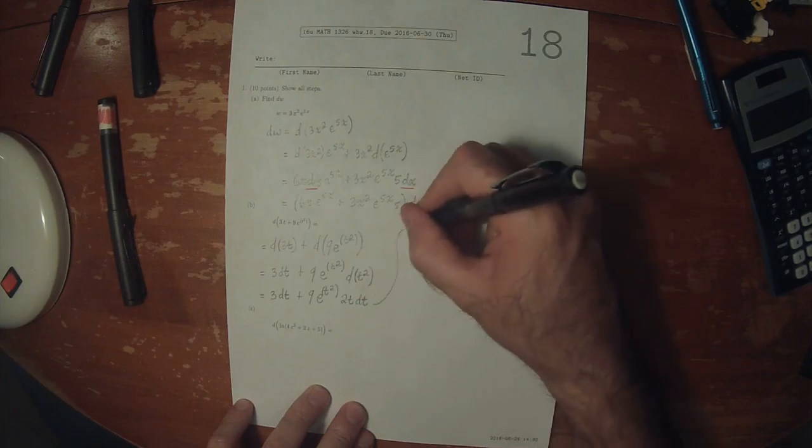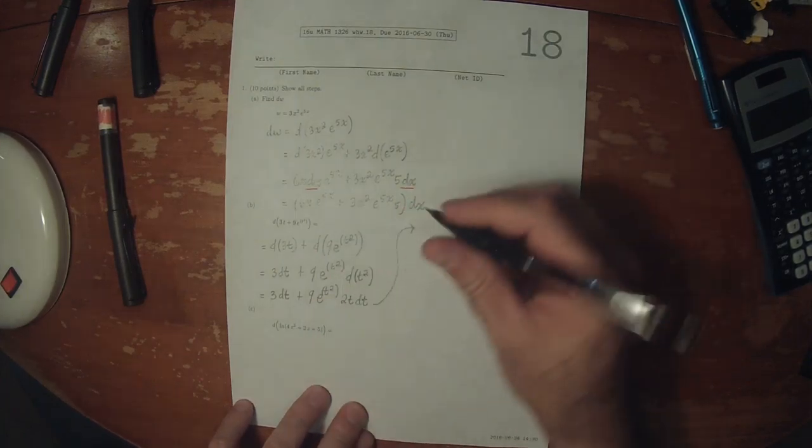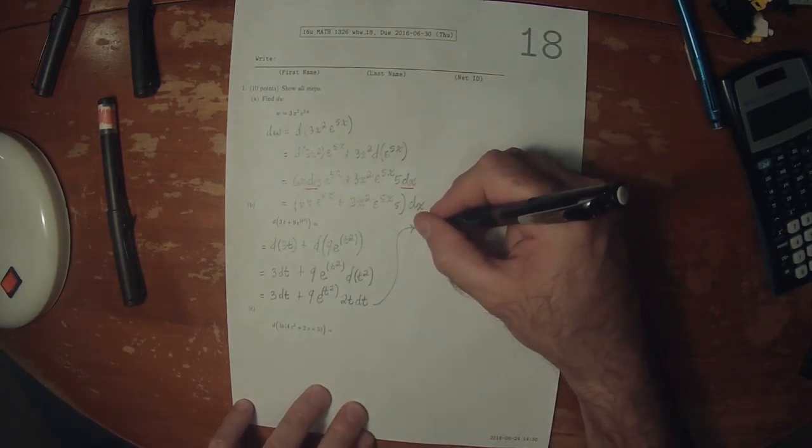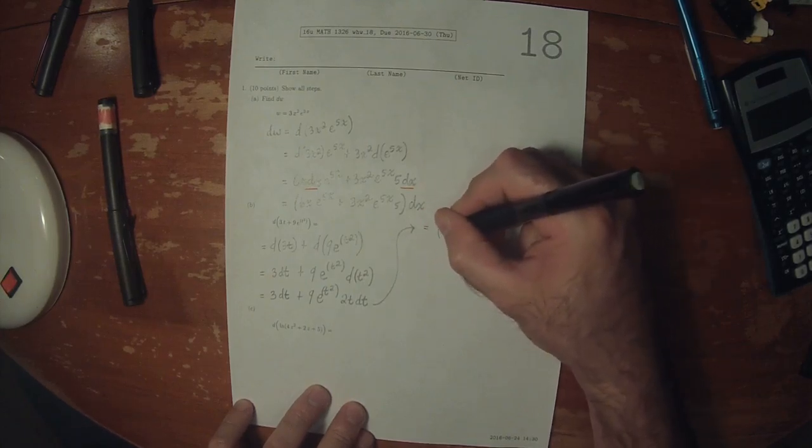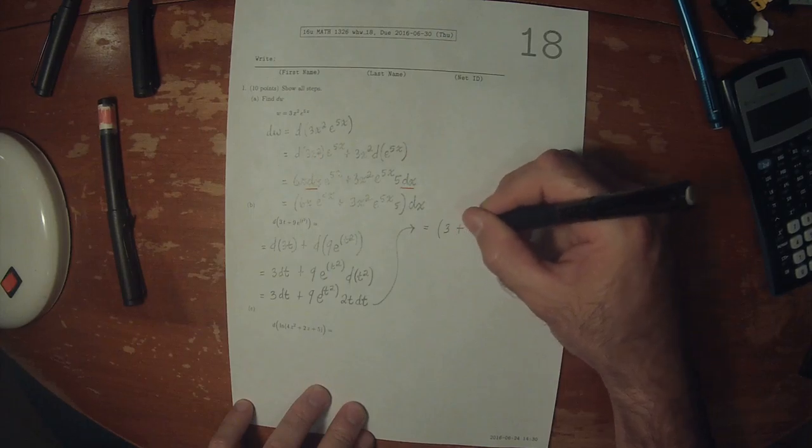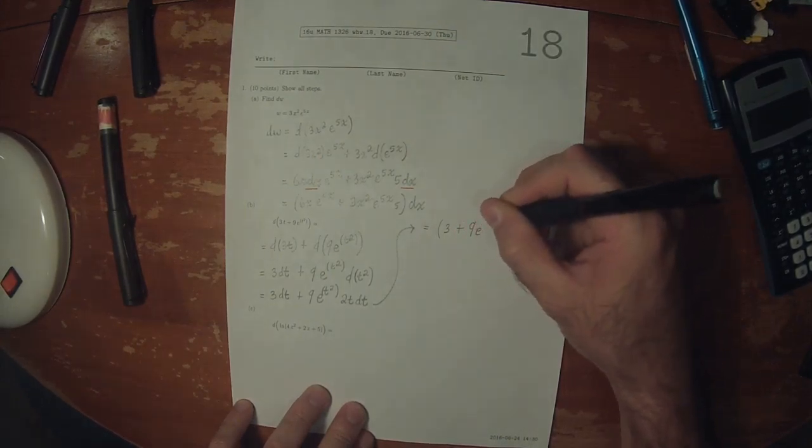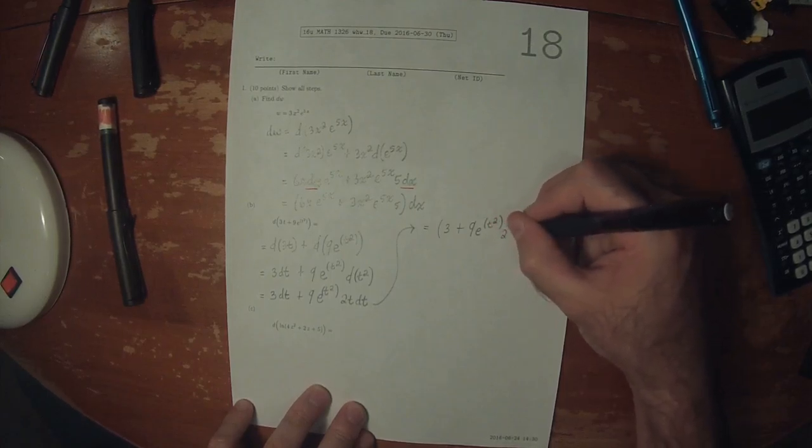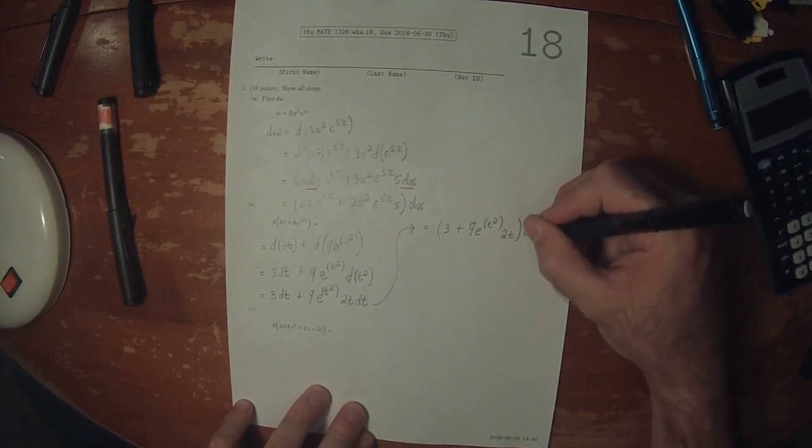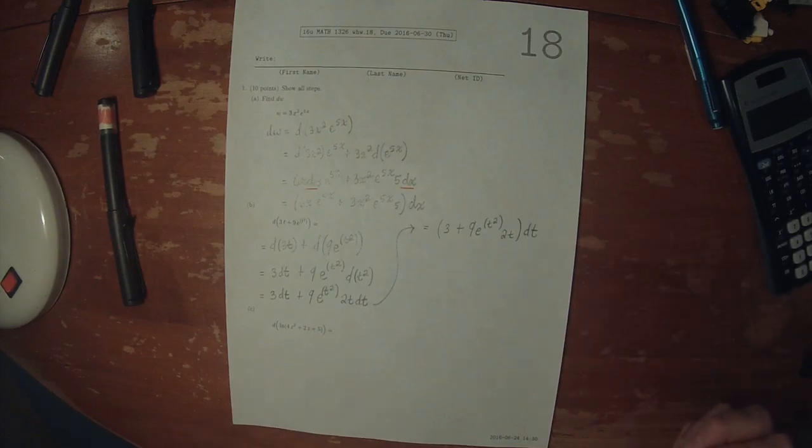Similar to the previous exercise, the dt is common, so that could be factored out as 3 plus 9e to t squared times 2t, with the dt factored out.